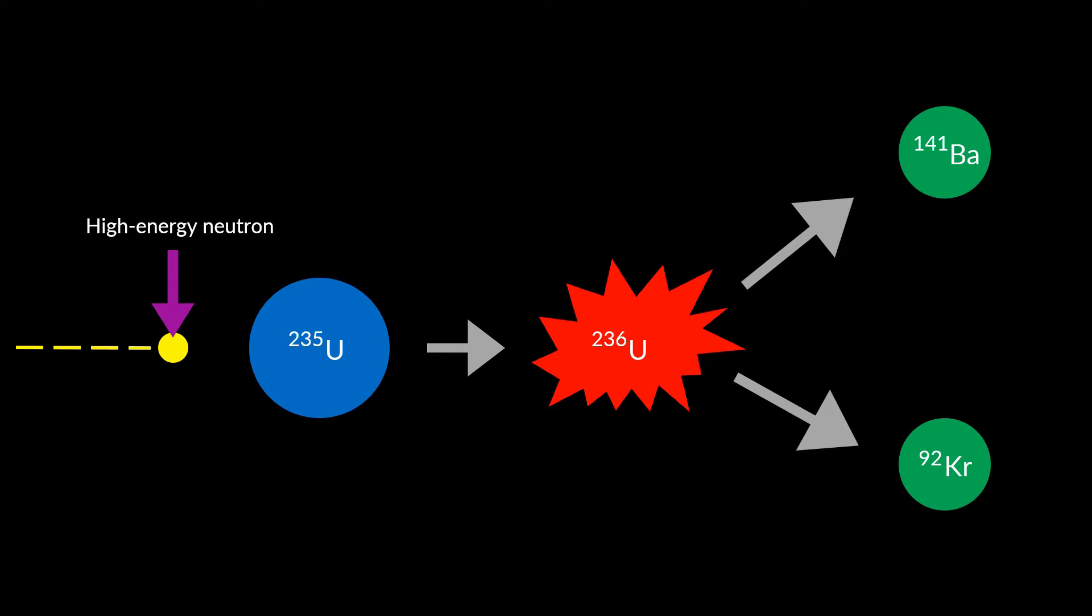You may notice that the atomic masses of the two atoms only add up to 233. Please remember that atomic mass is the sum of the number of protons and the number of neutrons in the atom. The number of protons will remain the same. Thus, there are three neutrons which are missing. These neutrons are now independent.